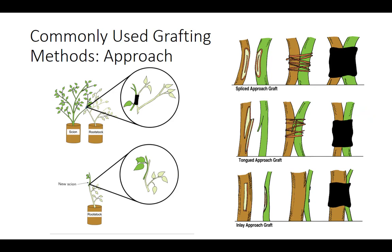Approach grafting is unique because both the rootstock and scion remain attached to the root systems during the grafting process. The scion is usually in a container, which is brought to the rootstock. This grafting is done while both partners are actively growing. It is a graft used when the scion is unique and the propagator does not want to remove it from the stock plant, and it is also used when standard grafts have not been successful. This type of grafting can be broken down into three categories: spliced approach, tongued approach, and inlay approach.